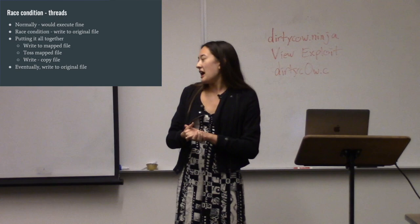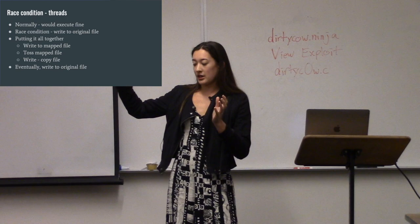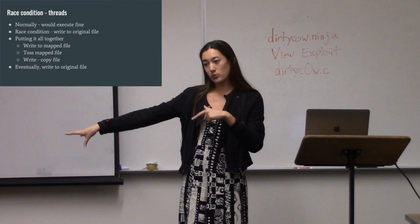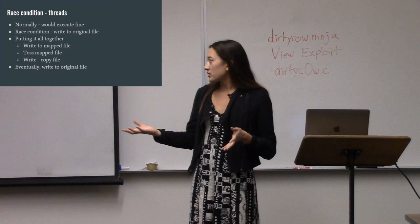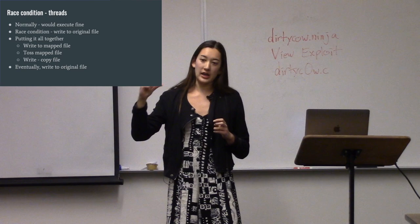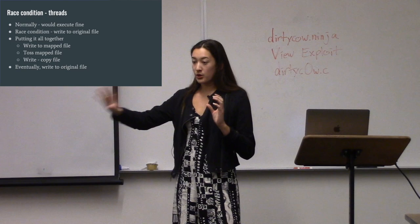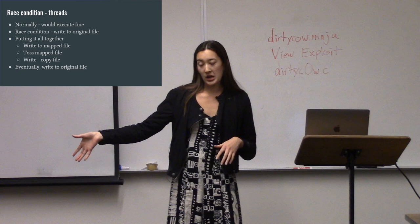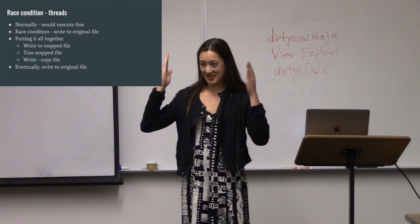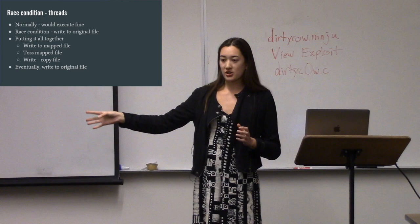What happens is you try to write to the mapped file, it copies from the original file into the mapped file, but before you can actually write to it, it throws that away. So you're no longer looking at that copy — you're looking at the original file. Eventually, when you're trying to write to that copied piece of the file in your mmapped memory segment and it's been thrown away, the kernel is like: okay, where do I write to? And it writes to the original file instead — that's how this vulnerability works. The race condition throws away your mapped section and you end up writing to the original file.